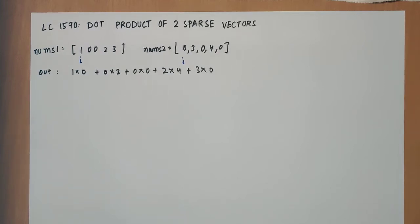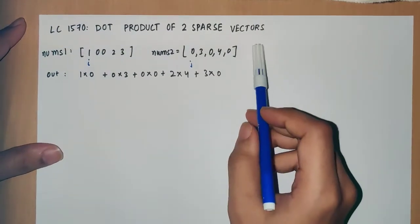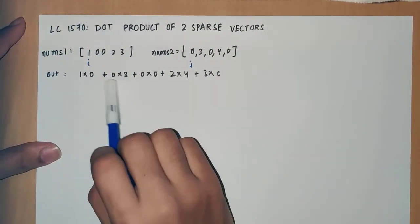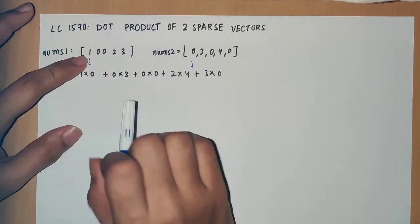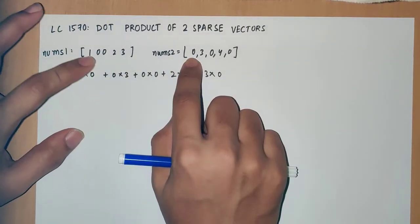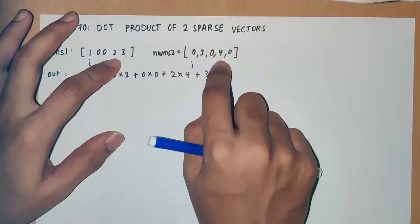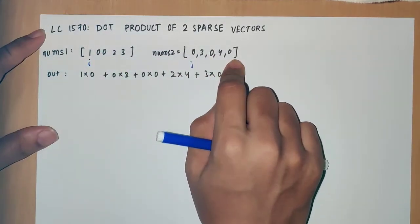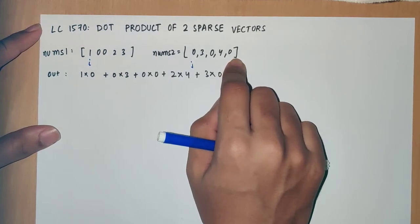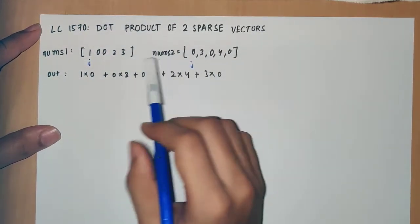Hello guys, this is an easy problem from LeetCode 1570. We need to find the dot product of two sparse vectors. Basically, dot product is like 1 multiplied by 0, 0 multiplied by 3, 0 multiplied by 0, 2 multiplied by 4, and 3 multiplied by 0.